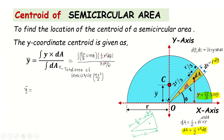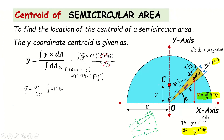After cancellation, the expression becomes y-bar = (2r/3π) × ∫sinθ·dθ. The variable is θ, and we need to determine the integration limits. The semicircle starts at θ = 0 radians (along the x-axis) and the sector rotates all the way to the other end, where θ = π radians. So the limits of integration are 0 to π.